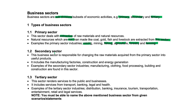Then we've got the secondary sector. This business sector is responsible for the changing of raw materials acquired from the primary sector into useful products. It includes manufacturing, factories, construction and energy generation. Some examples of the secondary sector include manufacturing, clothing, food processing and building.